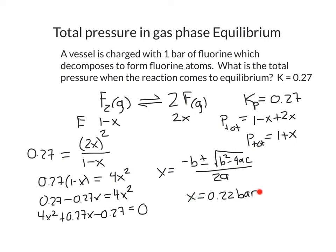Finally, plugging x into the expression for total pressure gives a total pressure at equilibrium of 1.22 bar. Remember that pressure started at 1 bar, and when fluorine atoms formed I made 2 for every 1 diatomic fluorine lost. So the pressure went up because I ended up with more total molecules in the system than I started with — giving a higher total pressure.